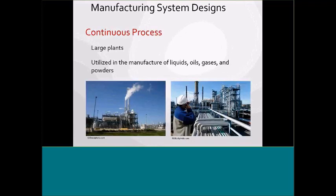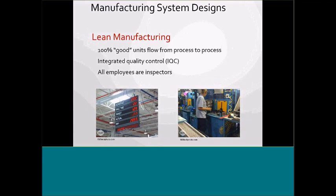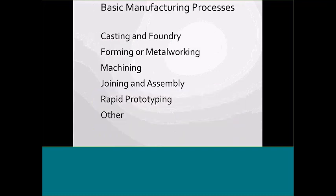When we look at continuous process, we're looking at large plants — products that utilize manufacturing of liquids, oils, gases, and powders. We also look at lean manufacturing: 100% of goods flow from process to process with integrated quality control. All employees are inspectors — we're starting to see that throughout industry. Where we used to have an inspection department that was reactive, now we're putting cost and quality responsibility with the respective operators.